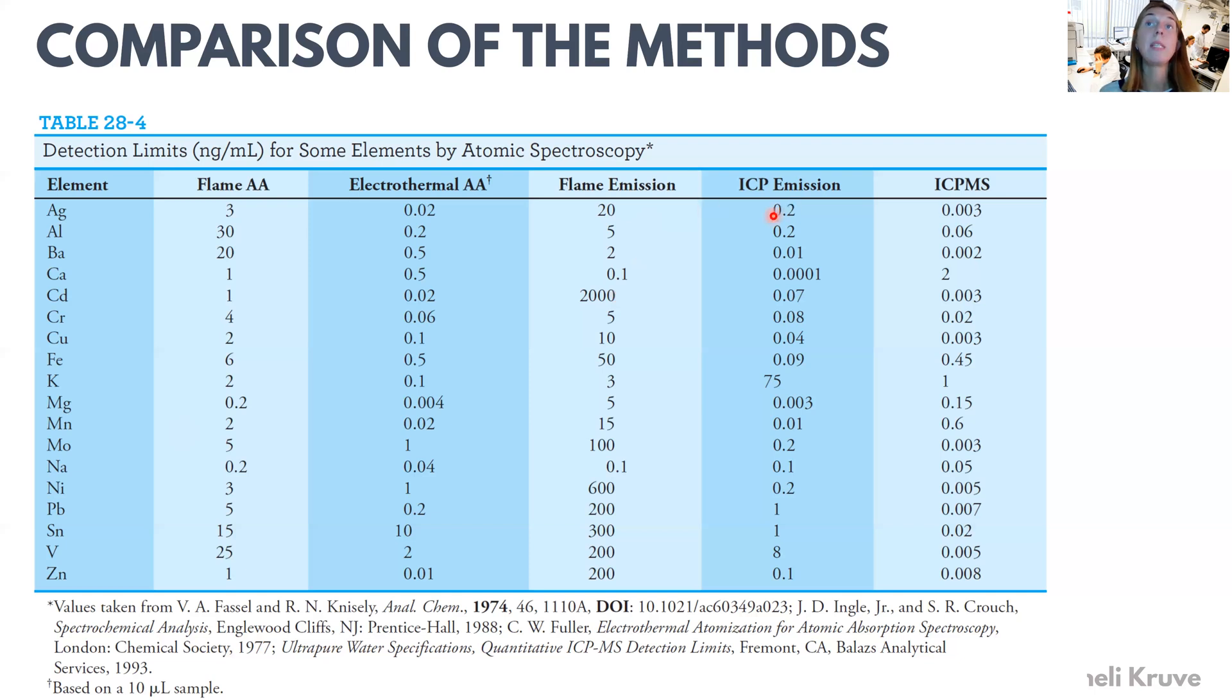When we now go to ICP emission spectroscopy, then we see that, depending on the element, the detection limits are much lower than they were for the flame emission, and they can also be much lower than they were for the atomic absorption with the graphite furnace. So ICP emission spectroscopy, of course, gives even better sensitivity for most of the elements, not all elements, but most elements.